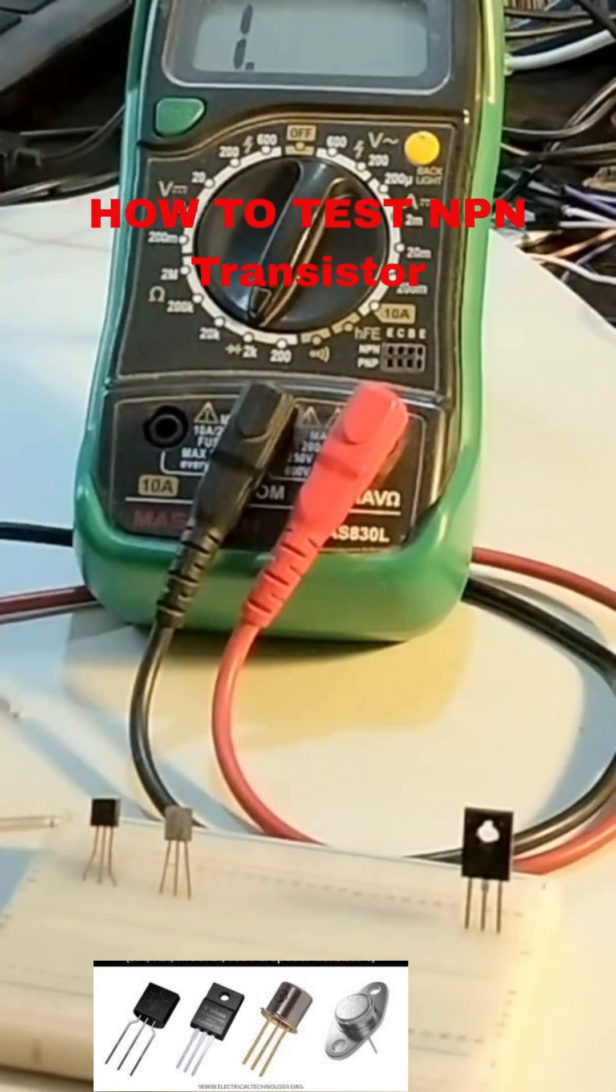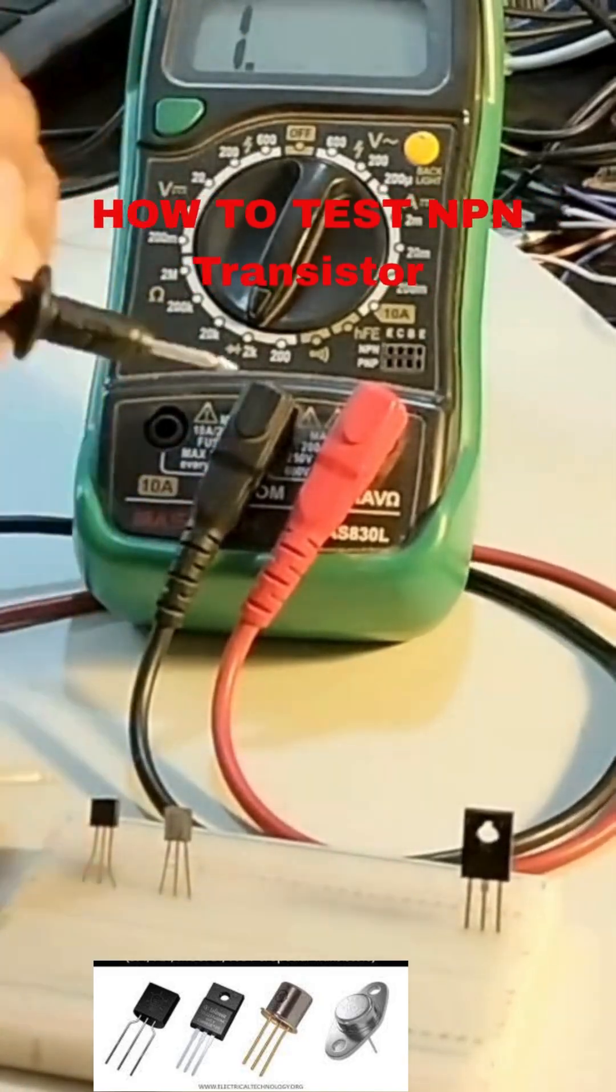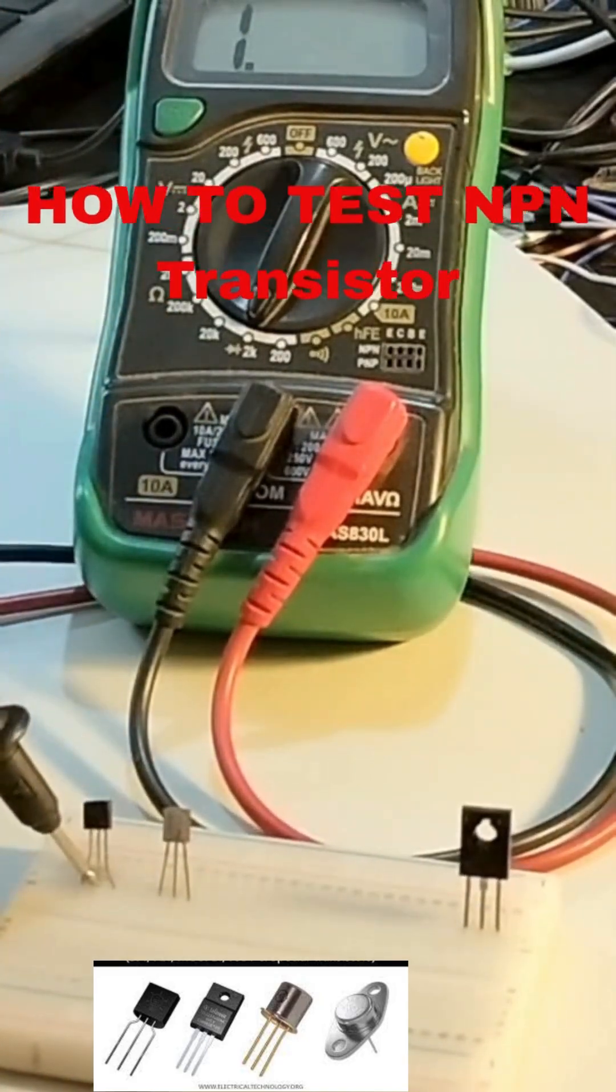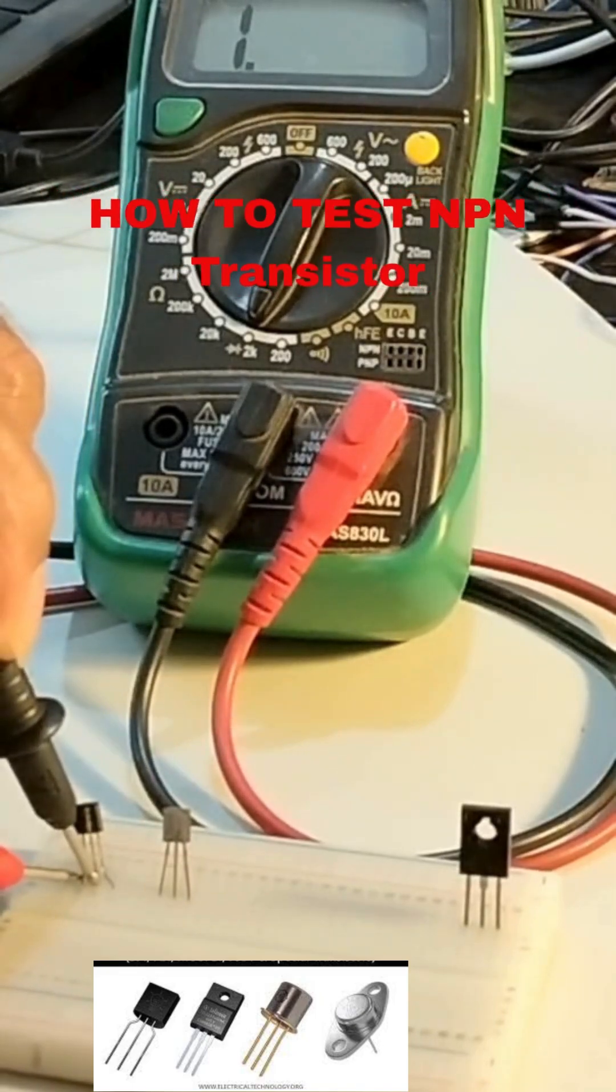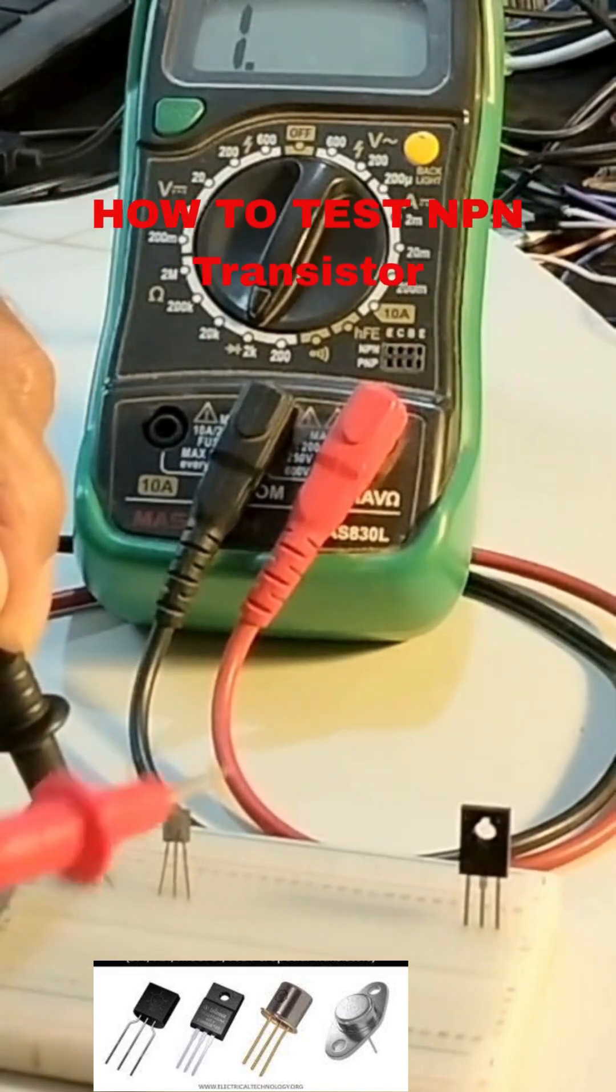Take a black color probe. You just put it on the center pin. Don't do anything. Put it on the center pin. Like this. If I am putting it on the center pin and I am putting red color on the other side, and I saw that nothing is coming. Other side, change the red color to the other side. Nothing is coming.